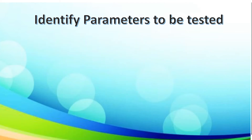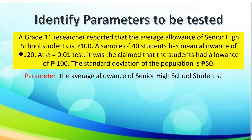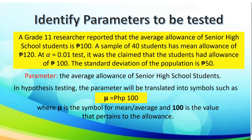Let's take another situation to identify parameters to be tested. A grade 11 researcher reported that the average allowance of senior high school students is 100 pesos. A sample of 40 students has a mean allowance of 120 pesos. At a level of significance of .01, it was claimed that the students had an allowance of 100 pesos. The standard deviation of the population is 50. The parameter is the average allowance of senior high school students. In hypothesis testing, this is translated as mu is equal to 100 pesos, where mu is the symbol for mean or average and 100 is the value that pertains to the allowance.